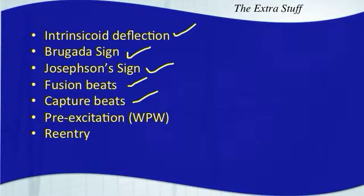Why is that important? Well, if you've learned about aberrancy in the previous lecture, you know it may be difficult to differentiate wide complex tachycardias. For instance, is it a supraventricular tachycardia with aberrancy or is it a ventricular tachycardia? A good rule of thumb to live by is that if you see a wide complex tachycardia and you're not sure what it is, you should assume that it's ventricular until proven otherwise.